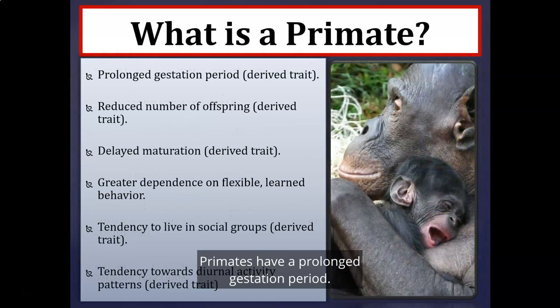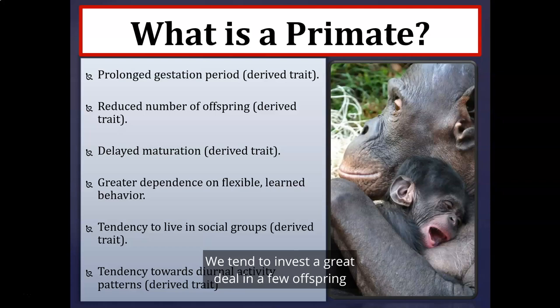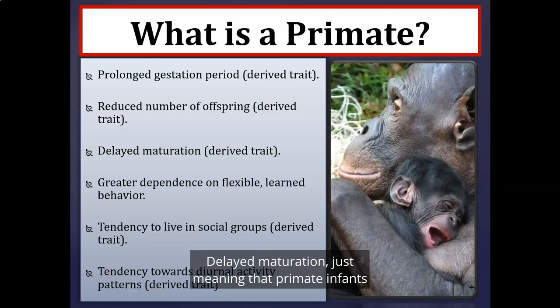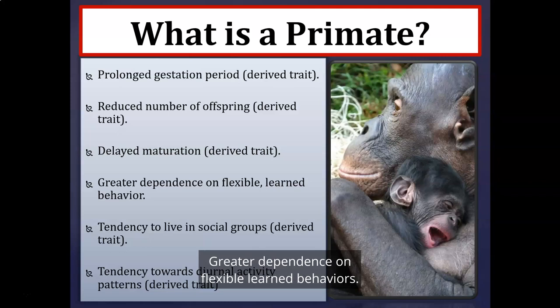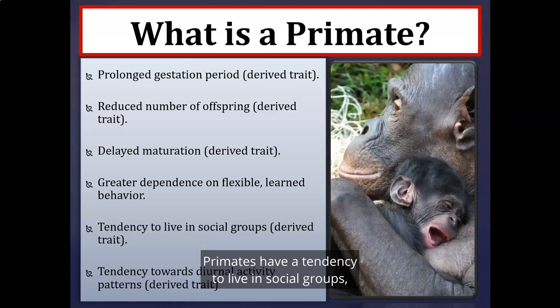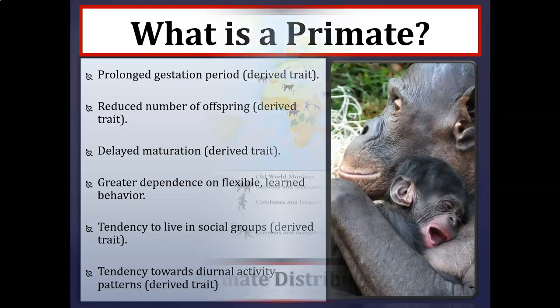Primates have a prolonged gestation period and reduced number of offspring — having one birth every two to three years. Delayed maturation means primate infants and juveniles are very dependent upon their parents for longer periods. There is a greater dependence on flexible, learned behaviors — culture and material culture — as well as a tendency to live in social groups.